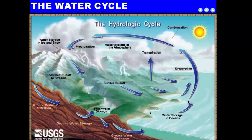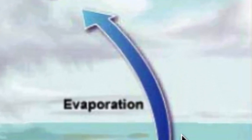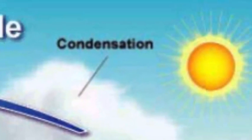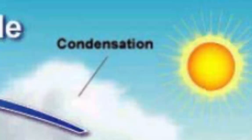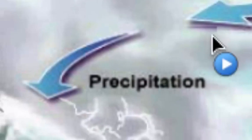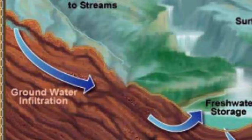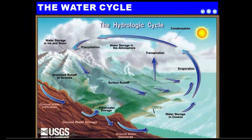Let's review the water cycle. Liquid water gets evaporated or transpired into water vapor gas and enters the atmosphere. As that vapor rises and cools, it condenses forming water droplets. Once those droplets collide and get too heavy, they fall back to Earth as rain, snow, sleet, or hail. That precipitation can be stored as ice or liquid water, run across the Earth's surface back into bodies of water, or infiltrate the ground. This cycle repeats over and over — which is why every glass of water you drink statistically has at least one molecule that once passed through a dinosaur.